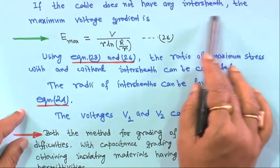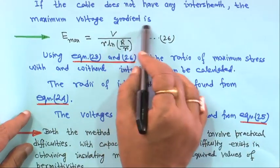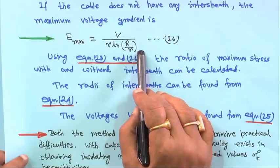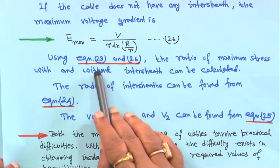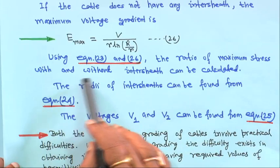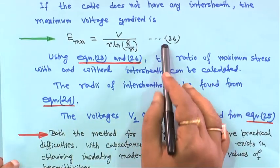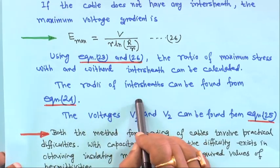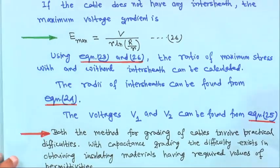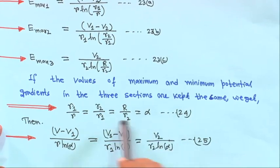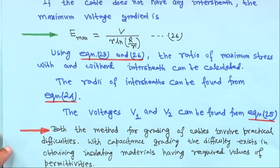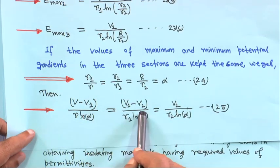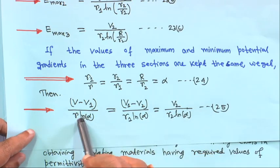If the cable does not have inter-sheets, the maximum voltage gradient is E_max = V / (r·ln(R/r)), which is equation 26. Using equations 23 and 26, the ratio of maximum stress with and without inter-sheets can be calculated. The radii of inter-sheets can be found from equation 24, and voltages V₁ and V₂ from equation 25.